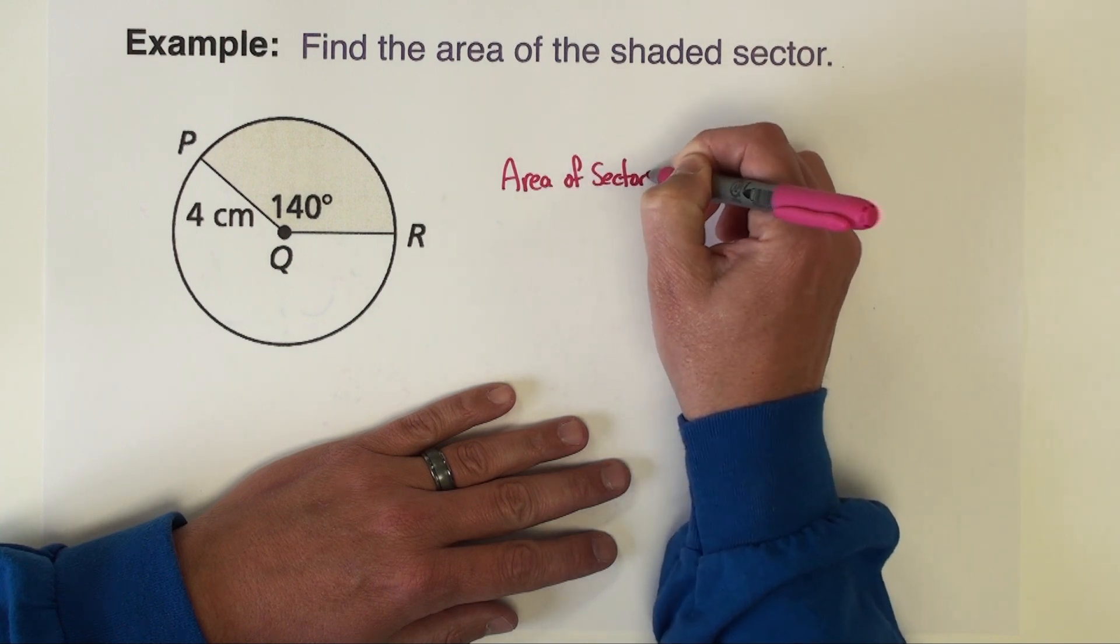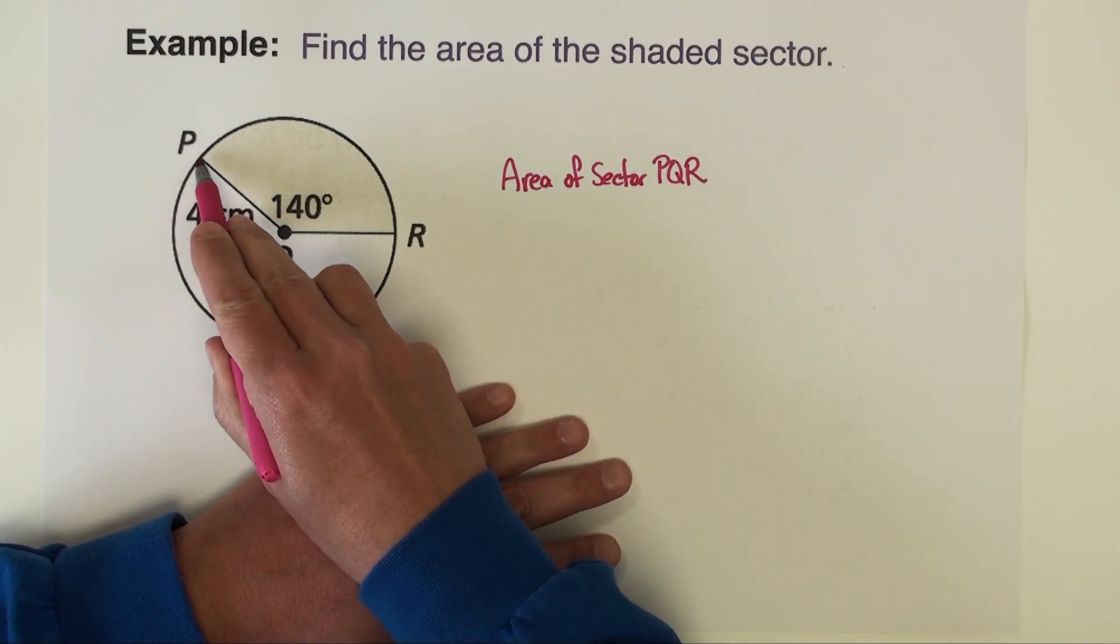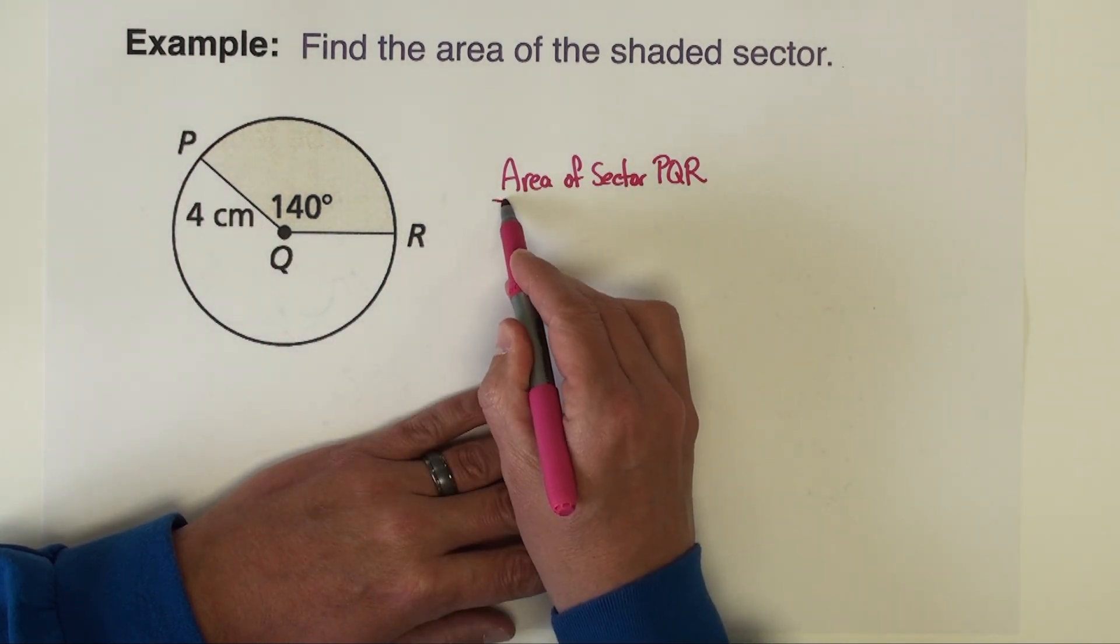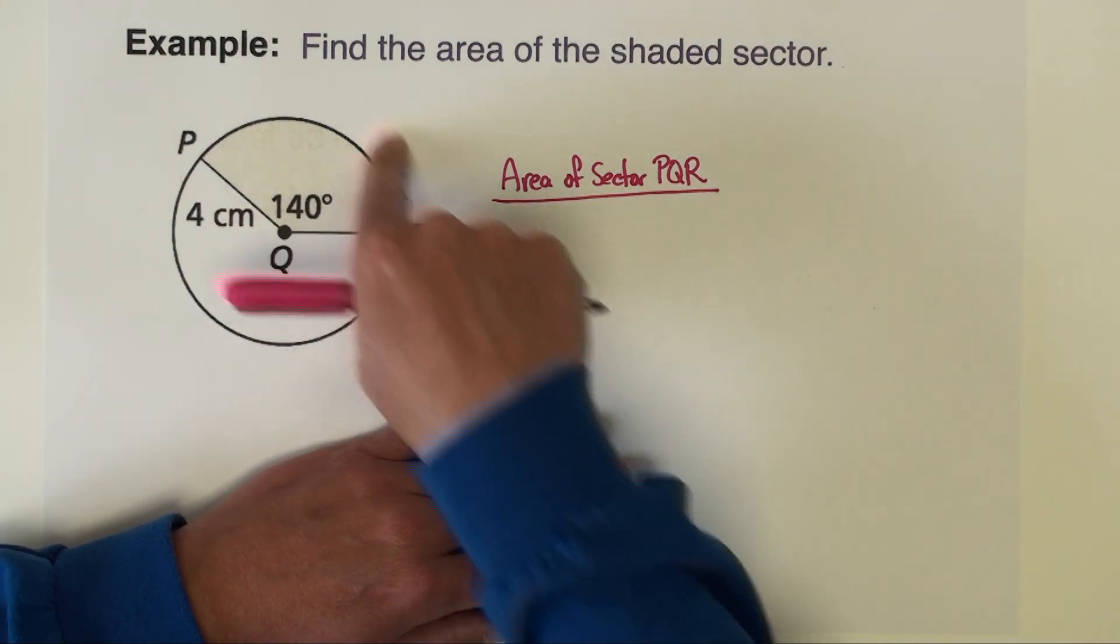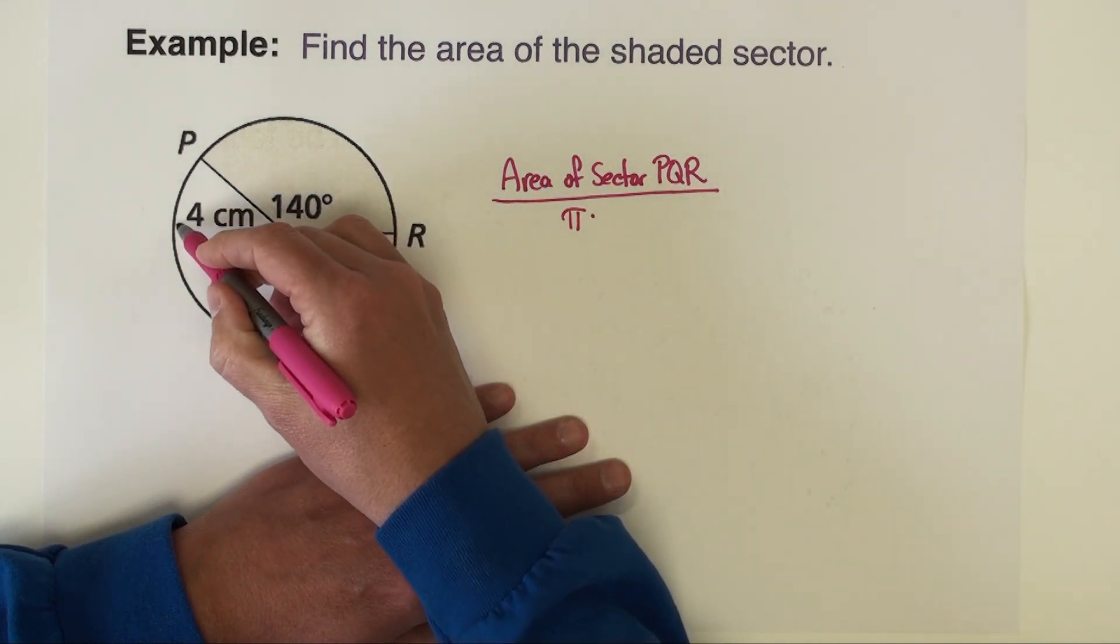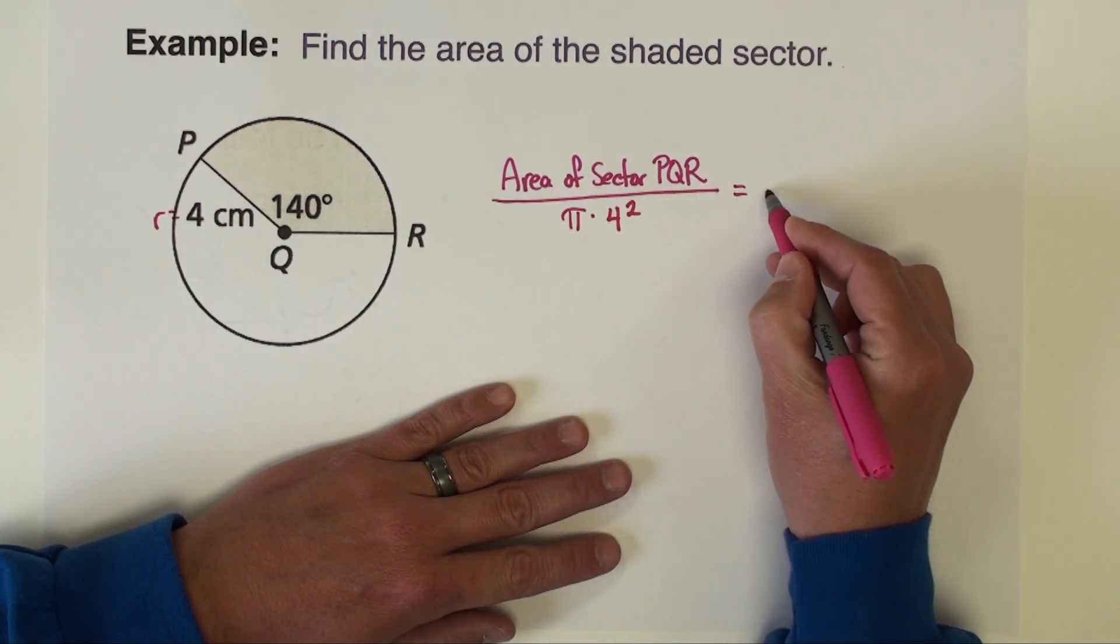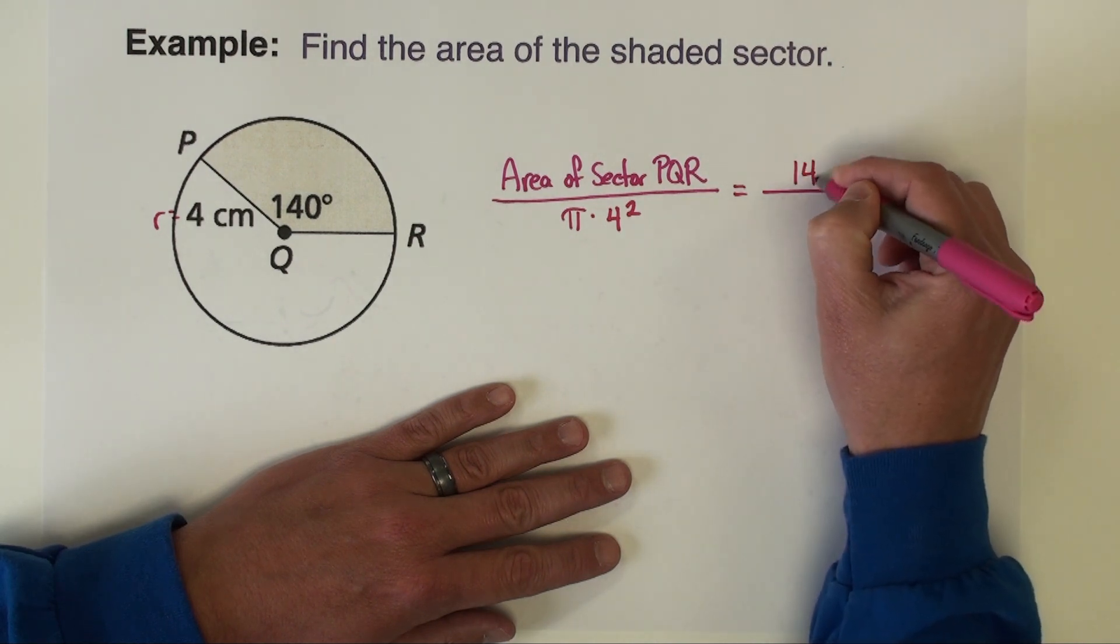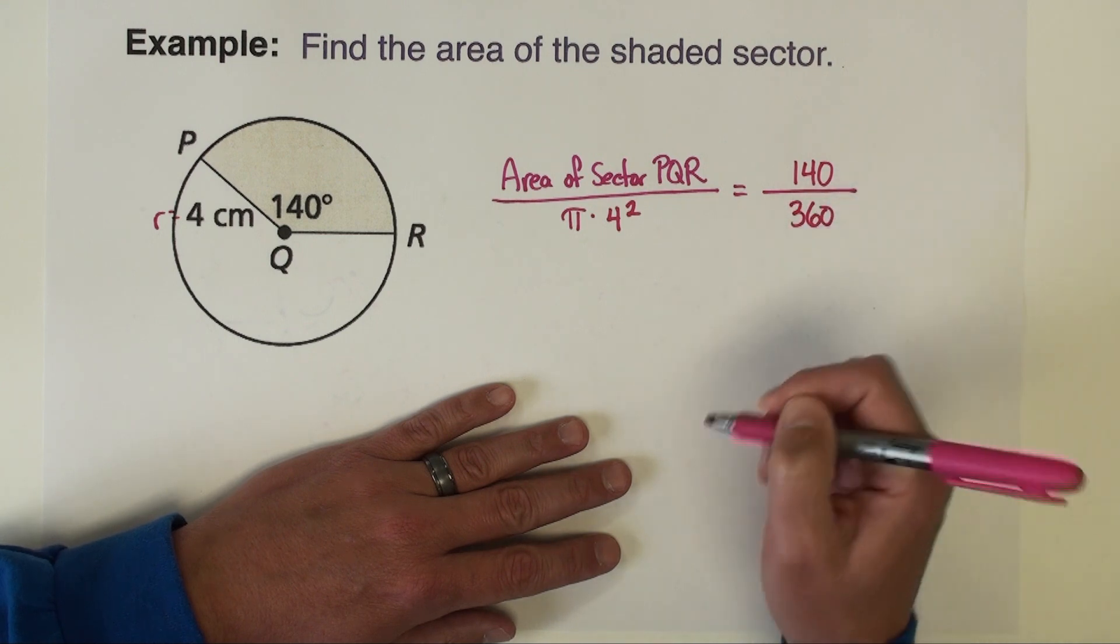Okay, starting at one point on the circle to the vertex of that angle to the other point on the circle, divided by the denominator needs to be the area of the entire circle. And the area of this circle is pi times the radius. This is the radius right here, pi times the radius squared. And that is equal to the measurement of the arc which is 140 divided by the entire circle in degrees which is 360. All right, let's go ahead and do a cross product.